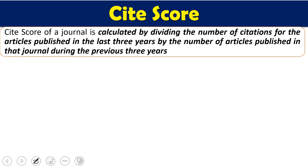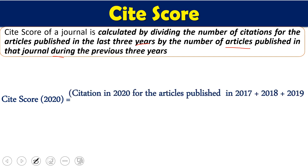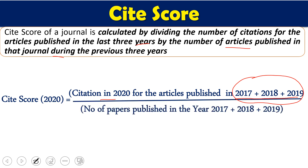Impact factor includes only articles and review articles, whereas CiteScore includes all document types. CiteScore is calculated by dividing the number of citations for articles published in the last three years by the number of articles published in the journal during those previous three years. For example, to calculate CiteScore for 2020, I take all articles published in 2017, 2018, and 2019, count how many citations those papers received in 2020, and divide by the number of papers published in those three years. For impact factor, we take only two years of data.